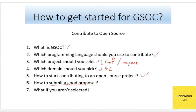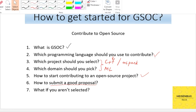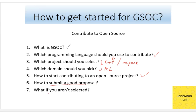Hey guys, so we are in the last video of the course on Google Summer of Code — how to get selected, how to get started. We have discussed everything right from what GSoC is, what programming language you should use, what project to pick, what domain, how to start contributing to that project, how to submit a good proposal. We are at the end of this course and in this one, I'm going to discuss about what do you do if you aren't selected.